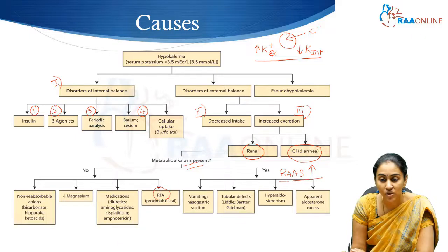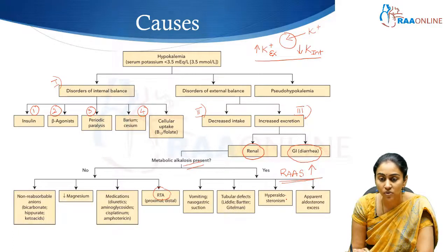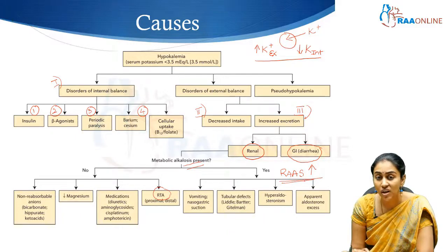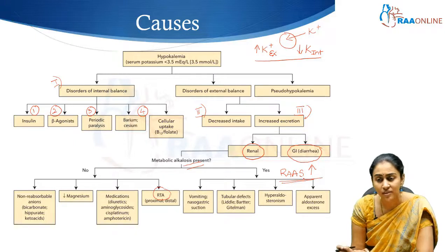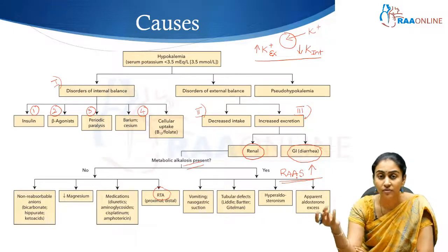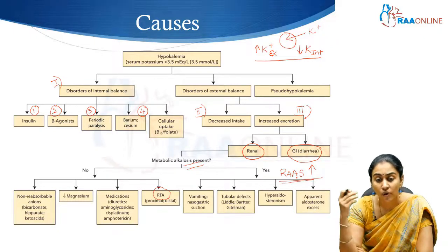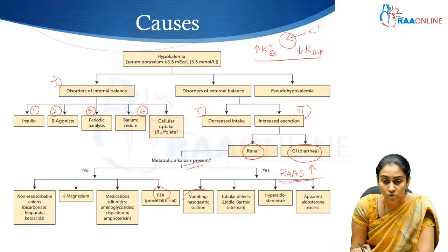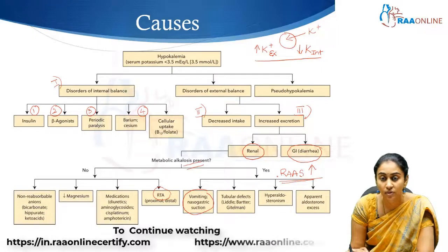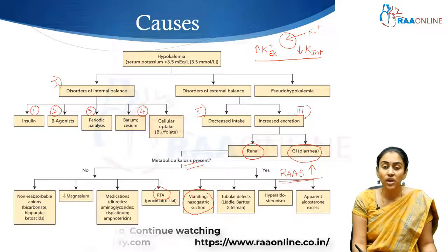Alkalosis with renal potassium loss could be due to hyperaldosteronism — primary hyperaldosteronism or pseudo-hyperaldosteronism such as Liddle syndrome — renin-secreting tumors, renal artery stenosis causing secondary renin hypersecretion, apparent aldosterone excess, or familial syndromes like glucocorticoid-remediable aldosteronism. Additionally, an often-overlooked cause not related to RAAS activation is vomiting or prolonged nasogastric drainage.